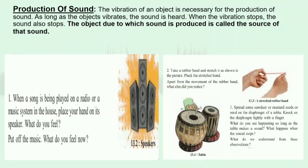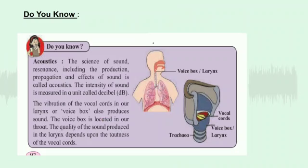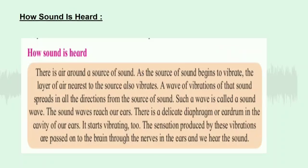The object due to which sound is produced is called the source of the sound. Acoustics is the science of sound, including the production, propagation, and effect of sound. The intensity of sound is measured in a unit called decibel, i.e., dB. The vibration of the vocal cords in our larynx, or voice box, also produces sound. The voice box is located in our throat. The quality of the sound produced depends upon the thickness of the vocal cords.